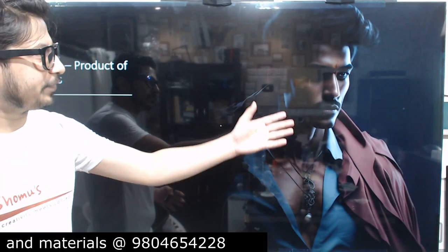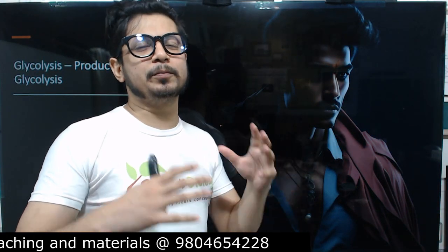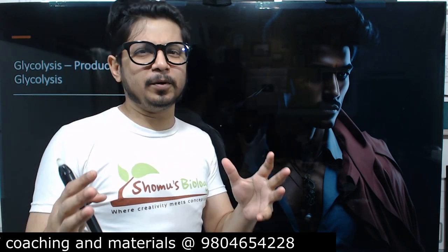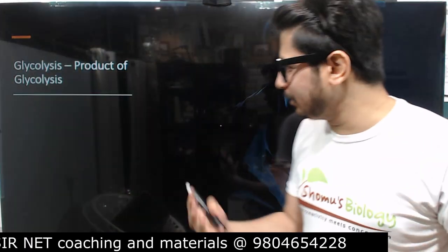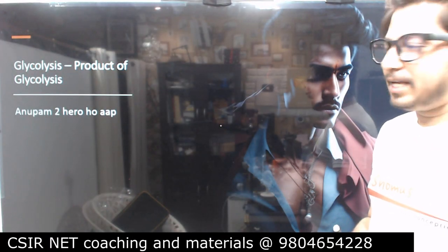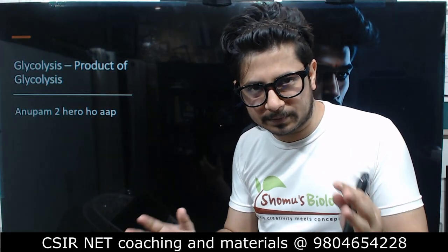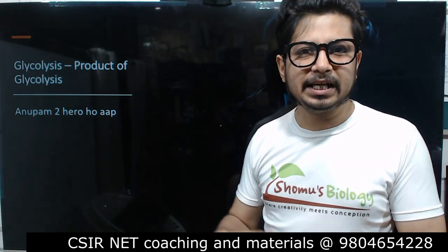Here I want you to meet my friend Anupam. Anupam is a student but he's a superhero to many students like you. Just remember this: Anupam is a superhero and print this image in your mind. The mnemonic we are going to use is 'Anupam to hero hoa' — that is the mnemonic you need to remember.